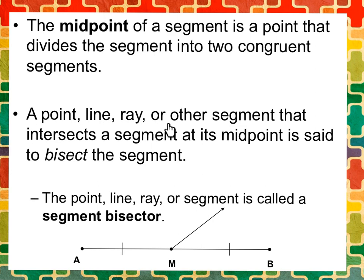A point, line, ray, or other segment that intersects a segment at its midpoint is said to bisect the segment. And here's an example of that down here. Here's segment AB, and we have this midpoint M. Notice it's notated by large M. And we have a ray coming from that midpoint.